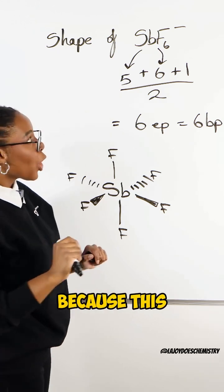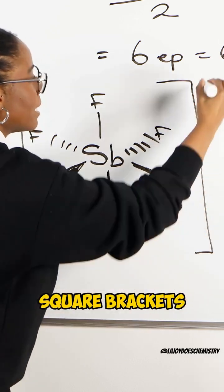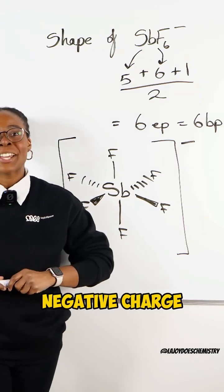Now we're not quite done because this is an ion. To complete our drawing, we'll put this all in square brackets and then give it its negative charge.